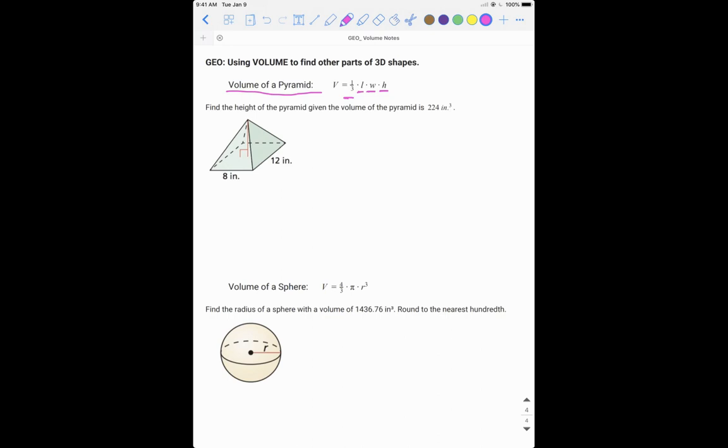So this question says, find the height of the pyramid given the volume of the pyramid is 224 inches cubed. So they give us our volume and we have to find the height. So they give us our V, we have to find our H. So let's plug in what's given.